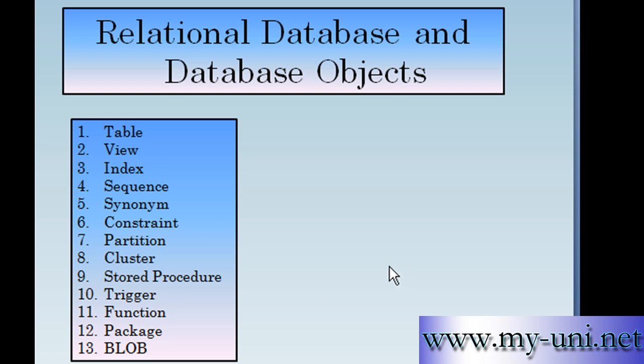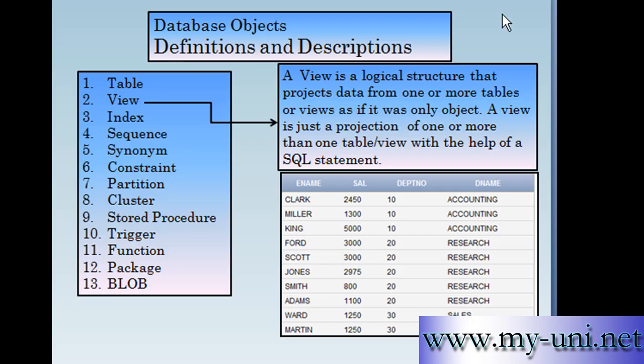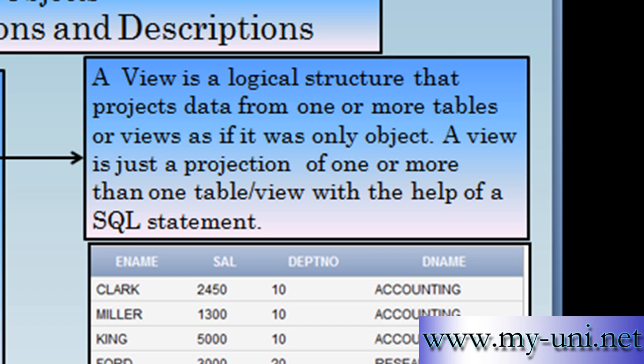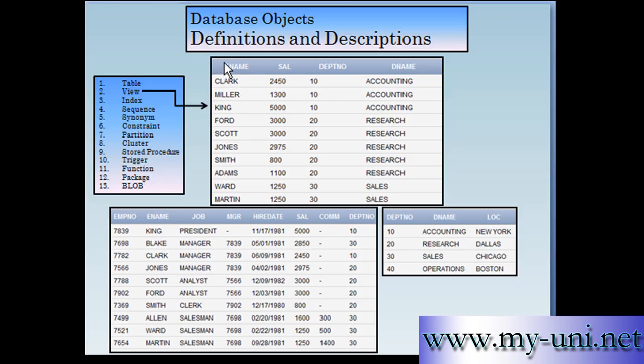A number of these objects are visible and there are many others, and you'll have to understand how to create and use these objects with the help of SQL. A view is a logical structure that projects data from one or more tables or views as if it was only one object. This view is projecting data from two different tables: employee name and salary from the EMP table, and department number and department name from the department table. These are dynamic objects. If you make a change here, the change will be projected in the view.